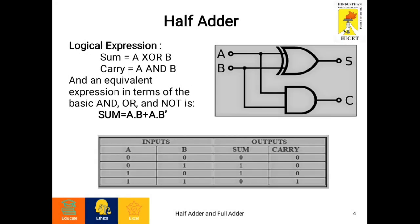Now in this image, we can clearly see A and B are the inputs given into an XOR gate and this result will be the sum. A and B are again given to an AND gate and the result is the carry.